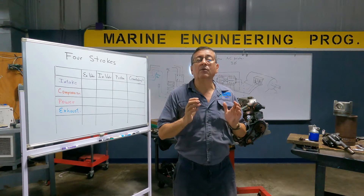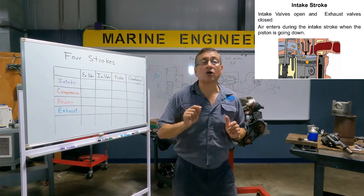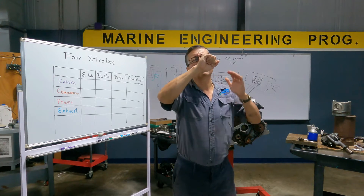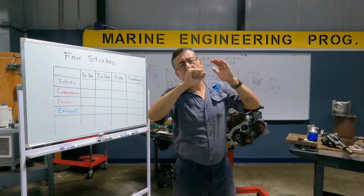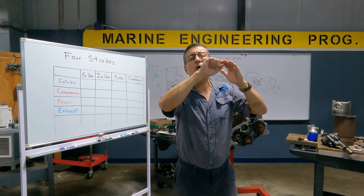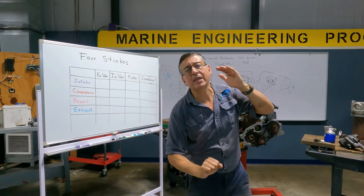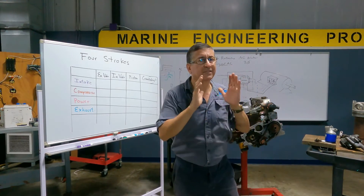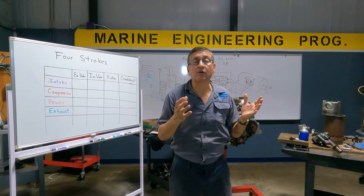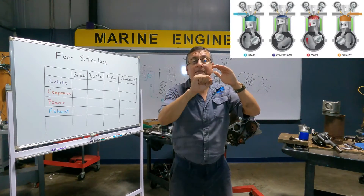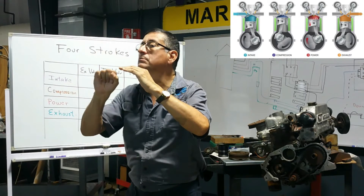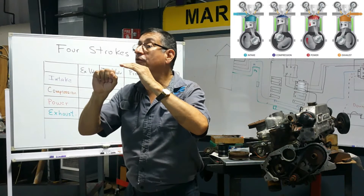We are going to start with the first stroke: intake. What's the meaning of a stroke? A stroke is the complete movement of the piston from top to the bottom or bottom to top — a complete linear movement of the piston. In one complete cycle there are four strokes: intake, compression, power, and exhaust.